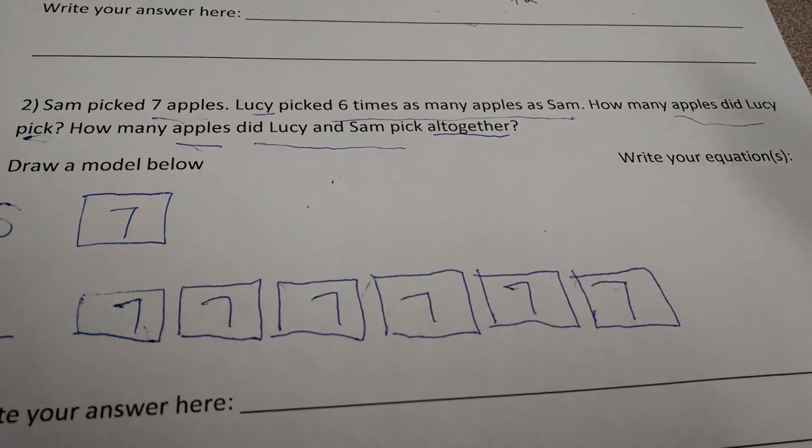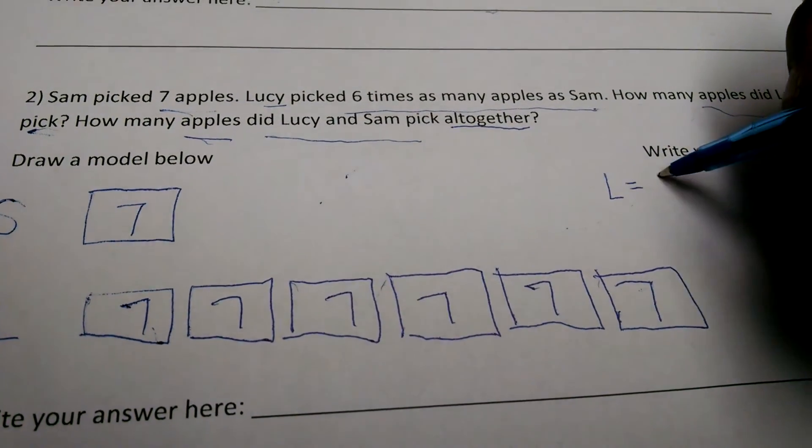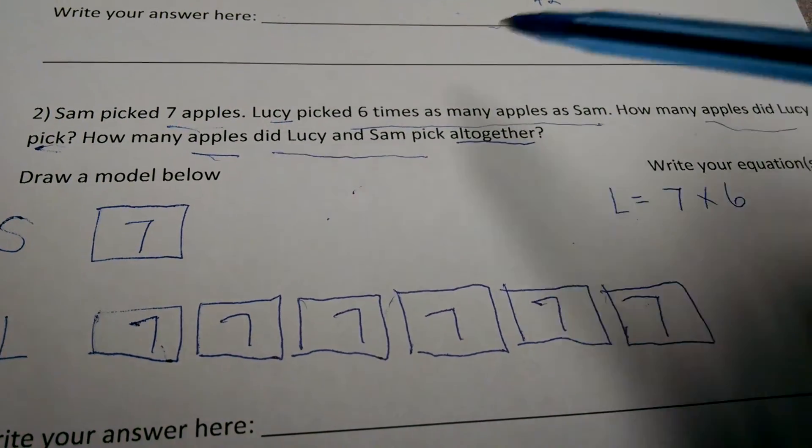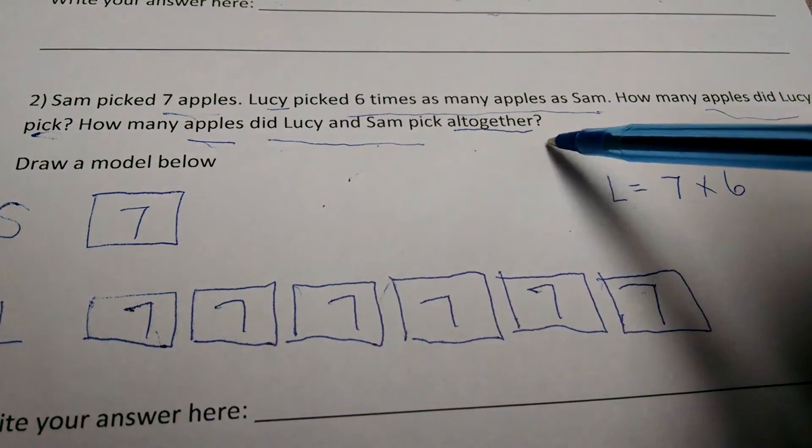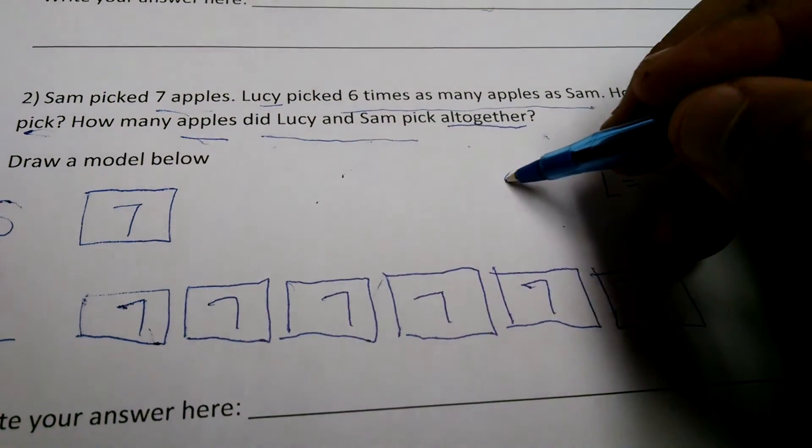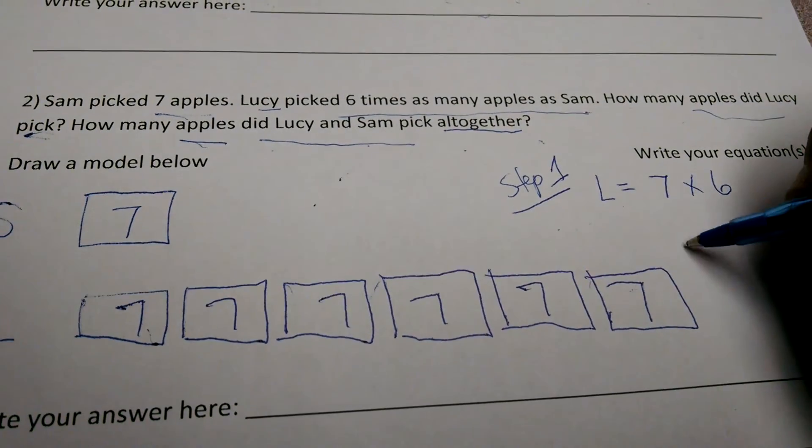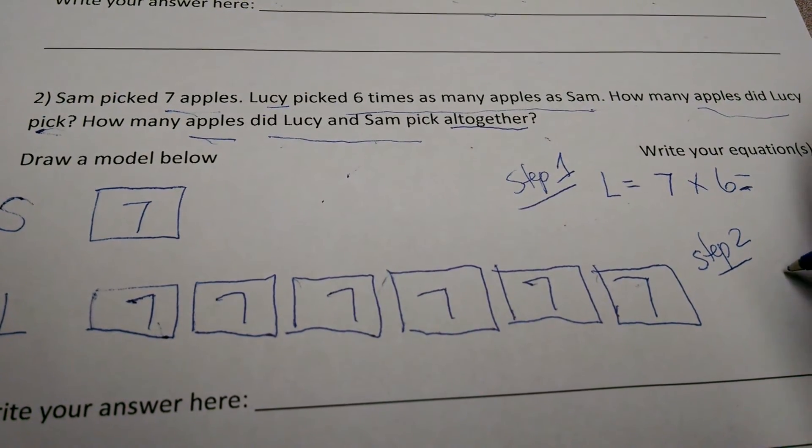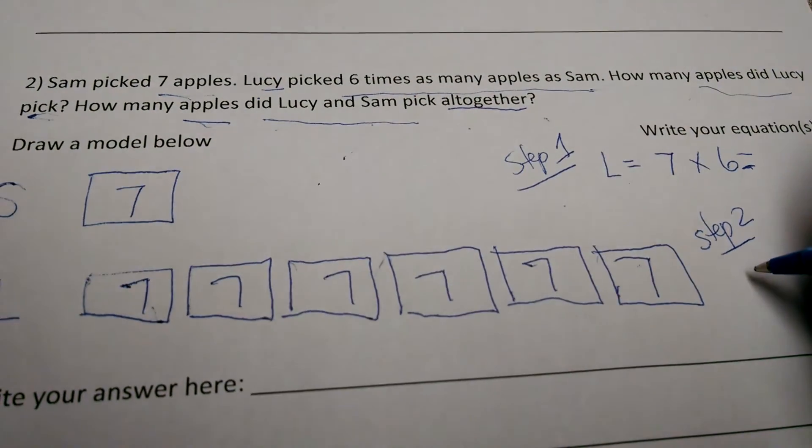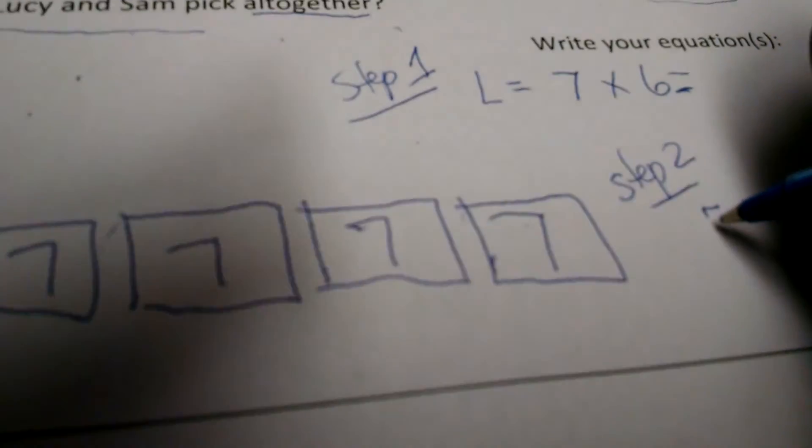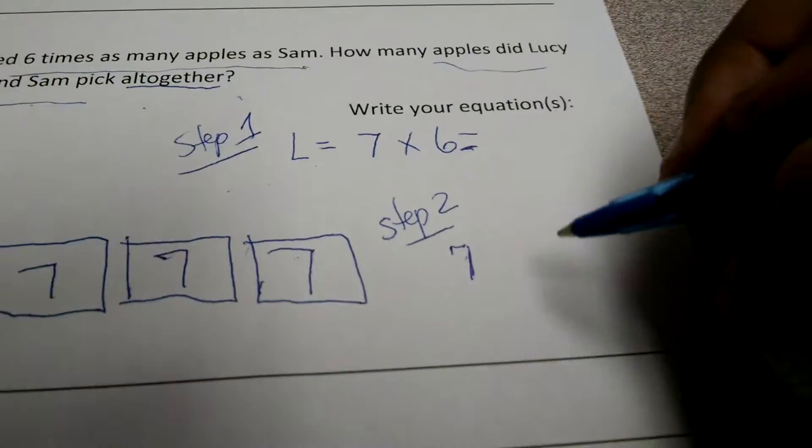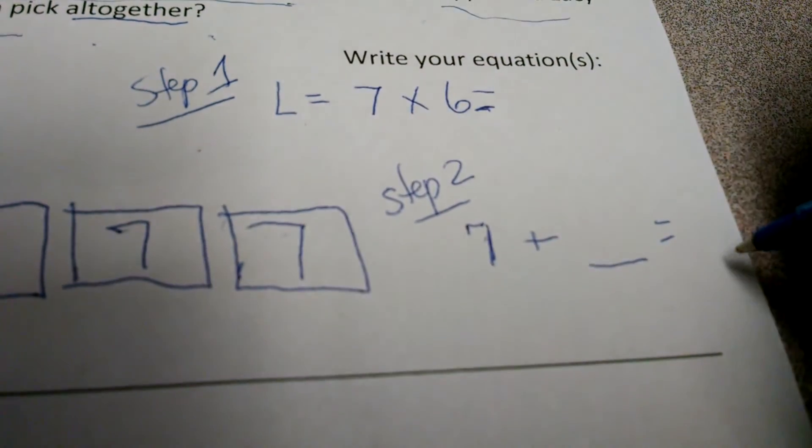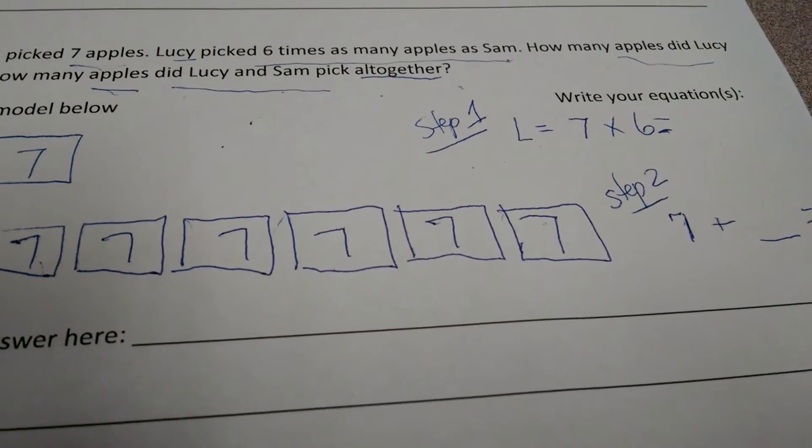And they wanted to know how many apples did Lucy pick? Well, my equation for Lucy, L equals seven times six. So, I can solve that. And then they want to know how many apples did Lucy and Sam pick all together. So, my second... So, this is step one. Step two... Well, once I find this answer, I have to add this plus Sam. So, that will be seven... Plus... The answer I get up here. And I'll find my second answer.